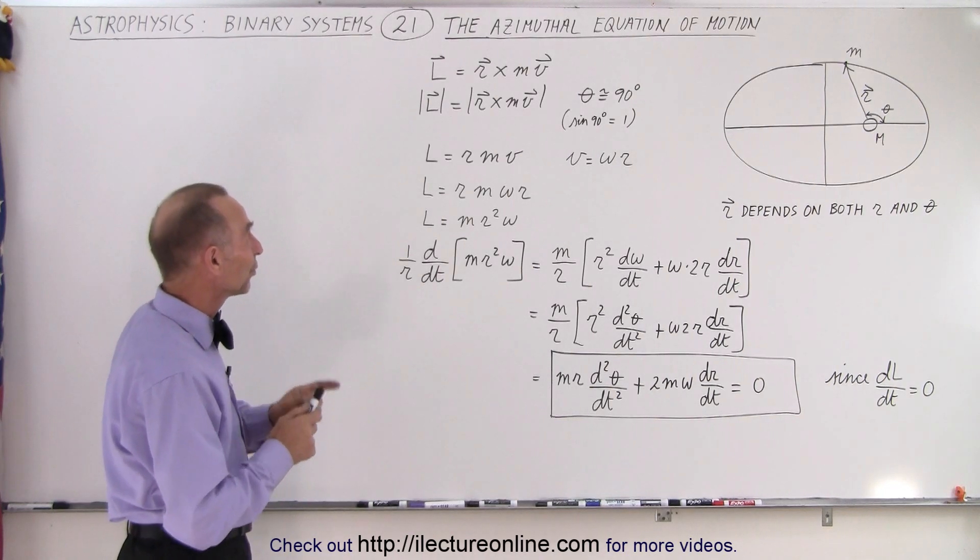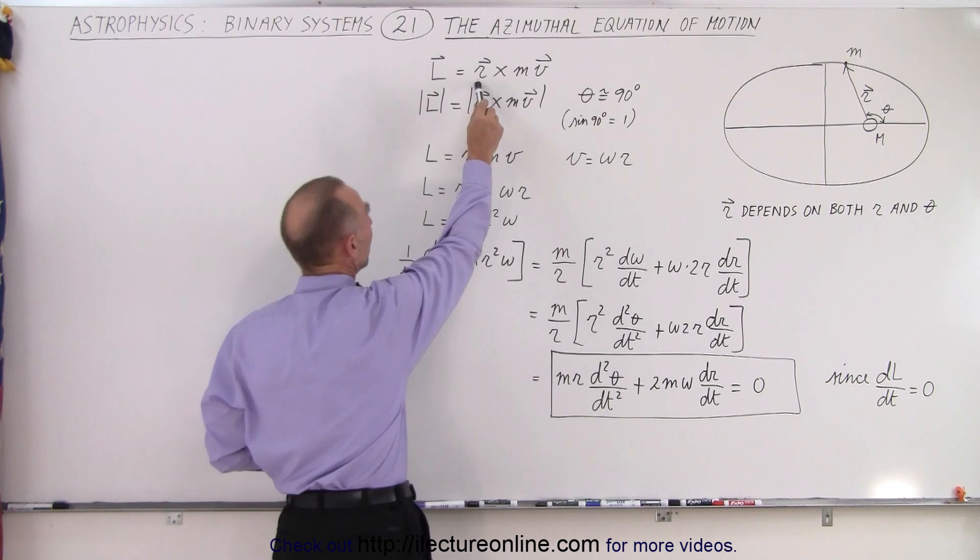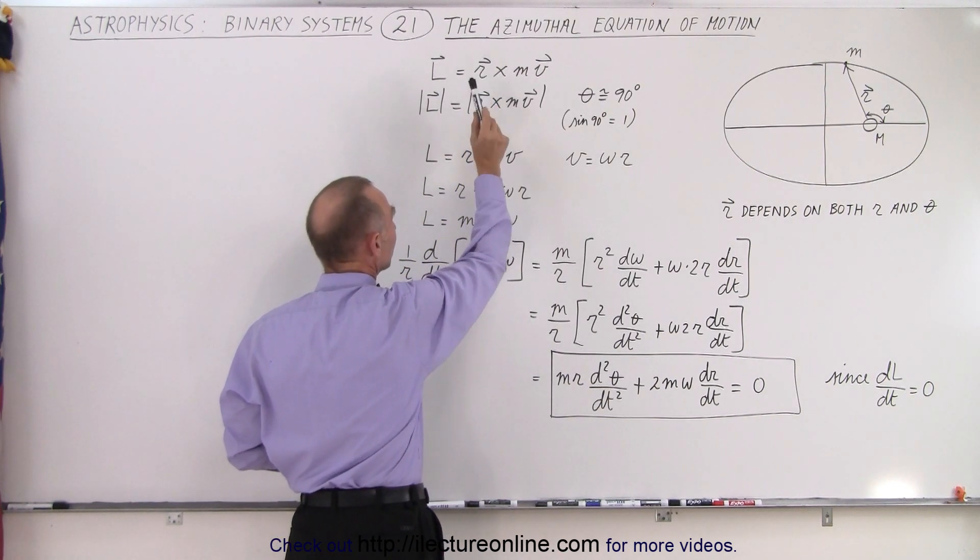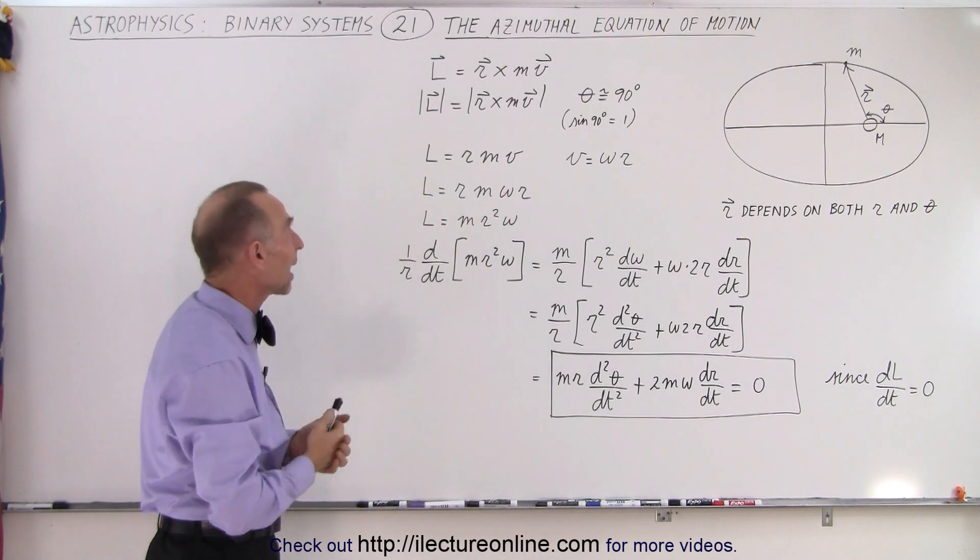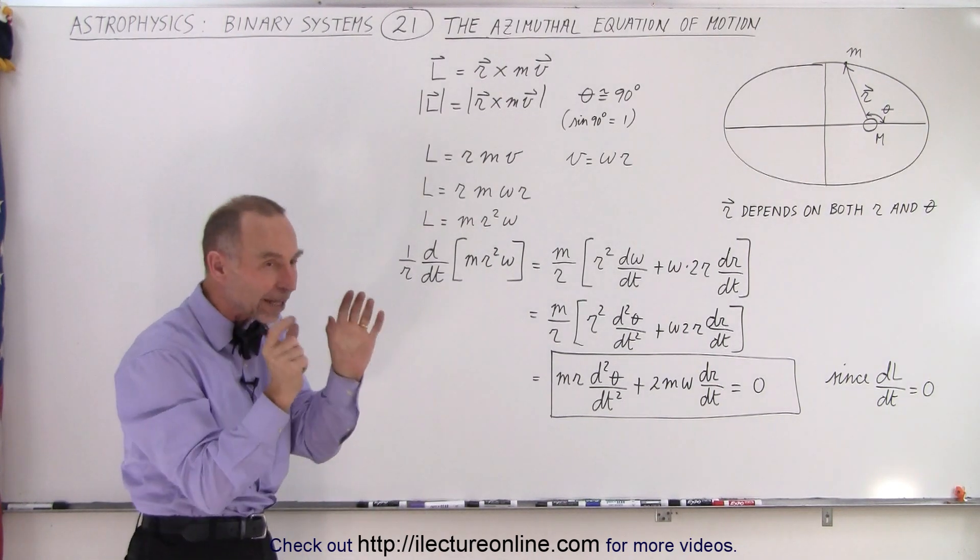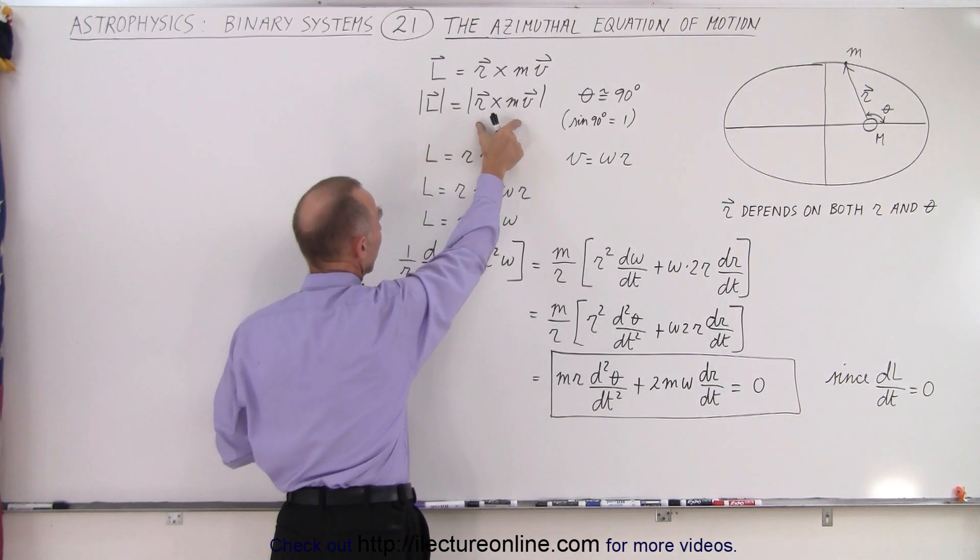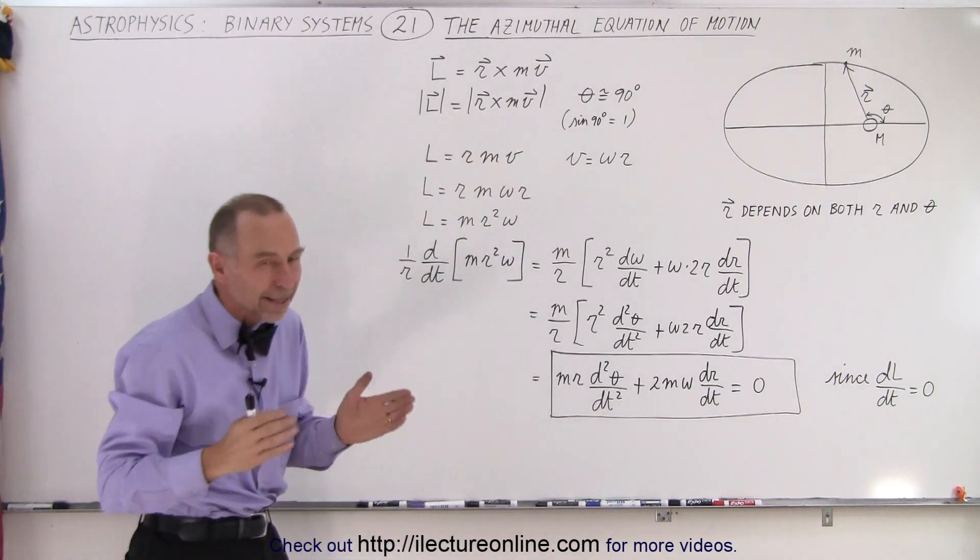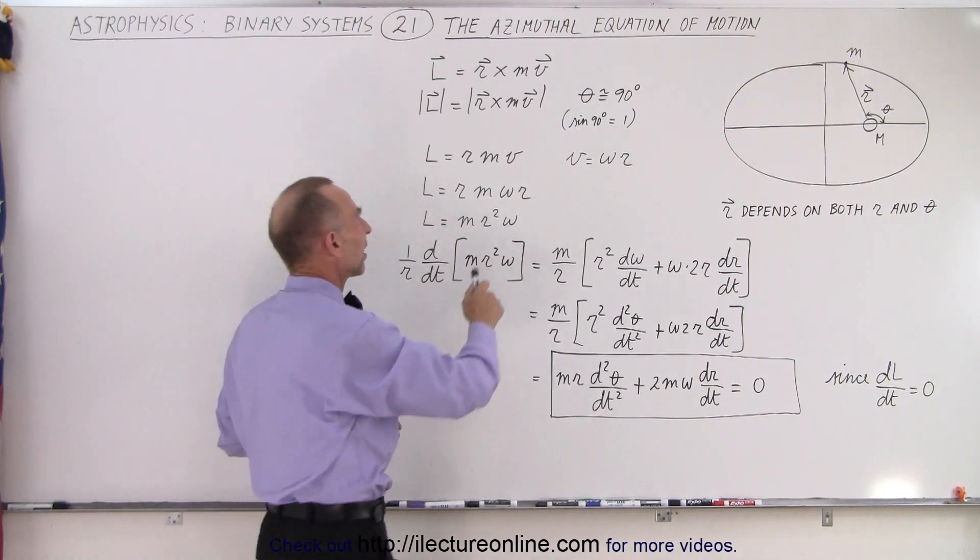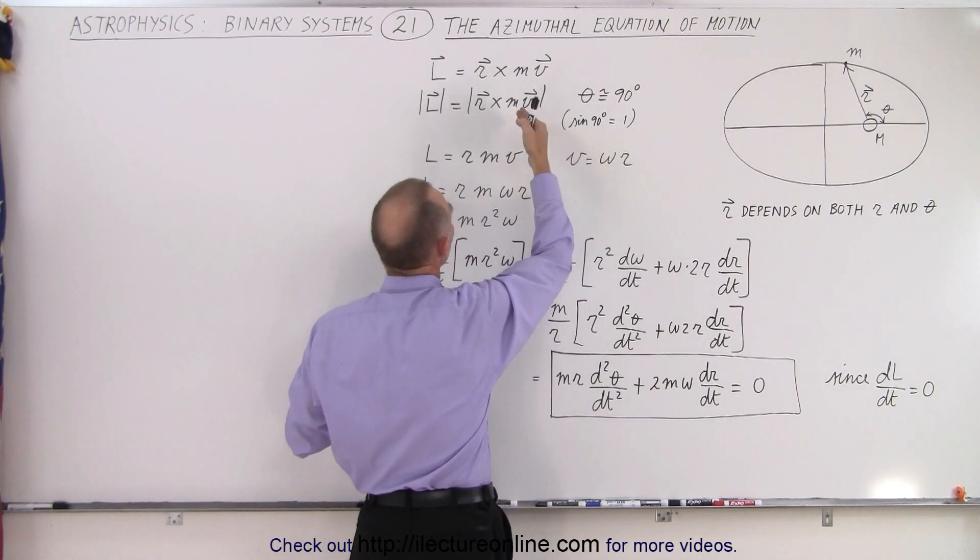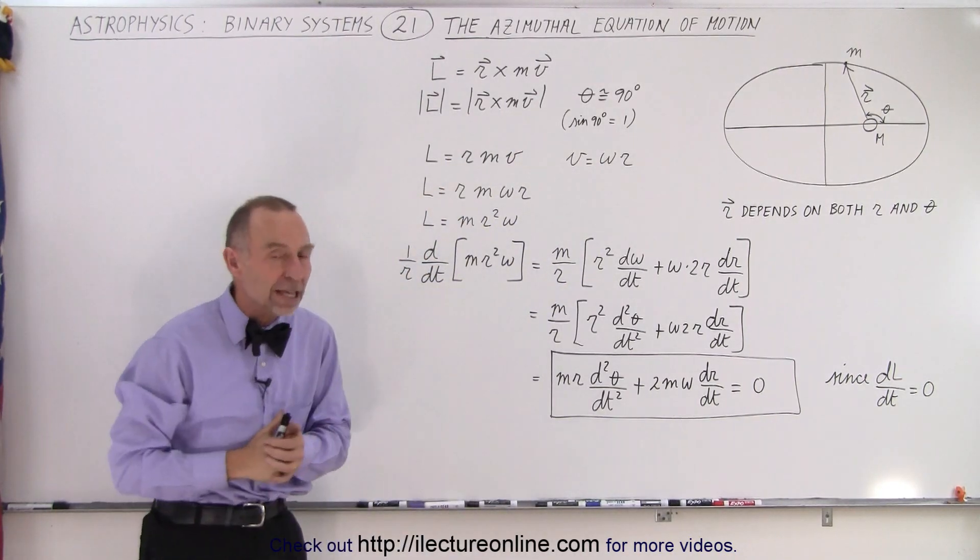All right, now starting with the concept of angular momentum, we know that it's equal to the cross product of the position vector and the momentum, also written as m times v. If we take the magnitude of both sides, we can say that the magnitude of the angular momentum must equal the magnitude of that cross product. Now since the angle is typically close to 90 degrees and the sine of 90 degrees equals 1, we could simply say that the magnitude of L is equal to Rmv.